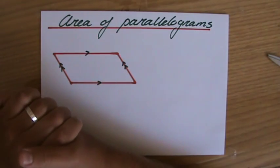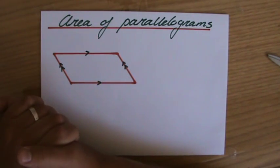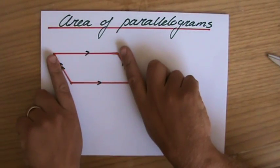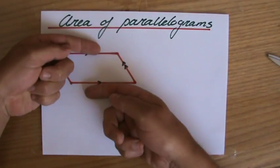Of course, before we start, very quickly you need to know by now what makes a parallelogram a parallelogram. The opposite sides are parallel to each other. You have two pairs of parallel sides.